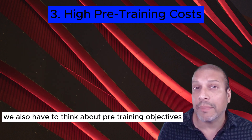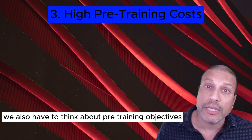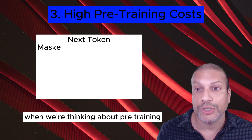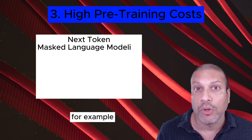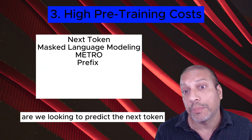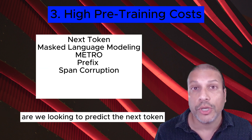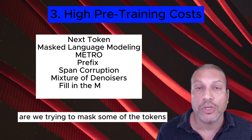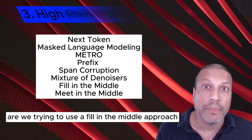We also have to think about pre-training objectives. For example, are we looking to predict the next token? Are we trying to mask some of the tokens? Are we trying to use a fill-in-the-middle approach?